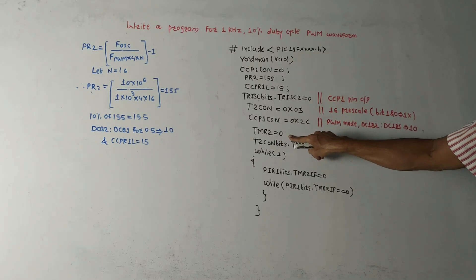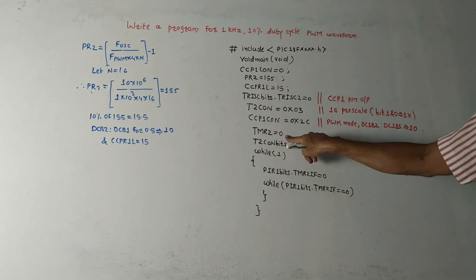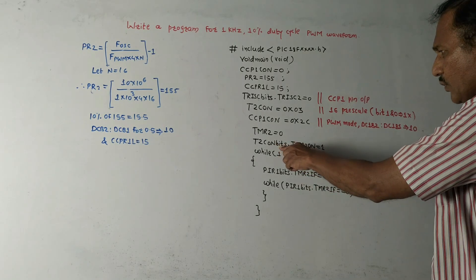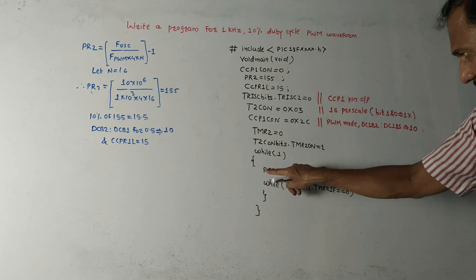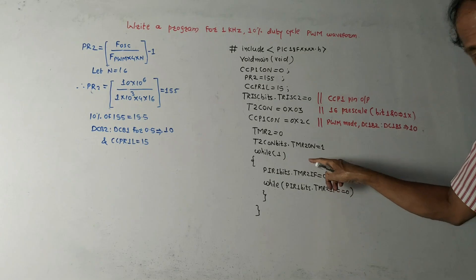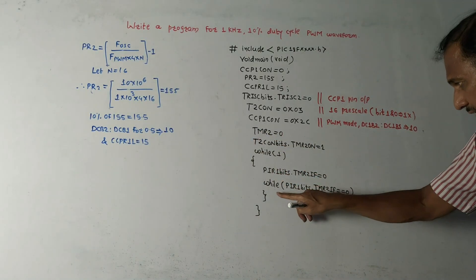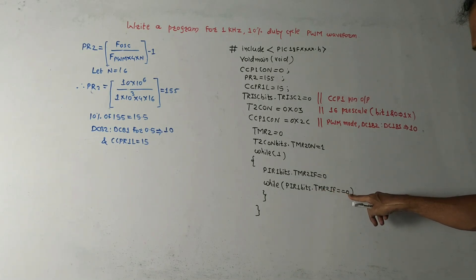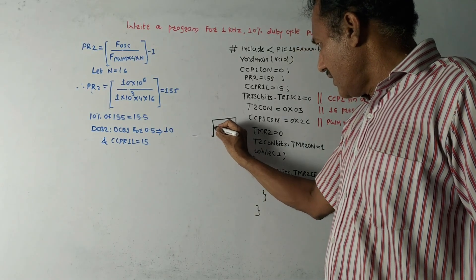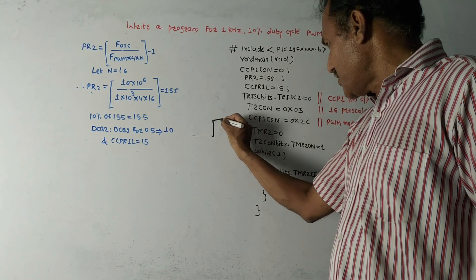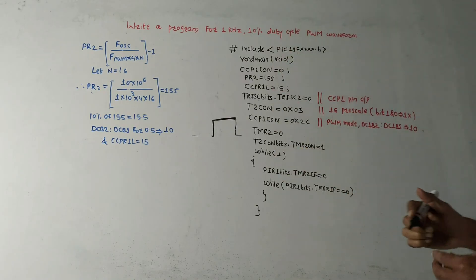Set Timer2 = 0 to reset it initially. Then set T2CON.TMR2ON = 1 to start the timer. In the while(1) loop: set the PIR1 flag to 0 initially. Once the count is reached, the flag is automatically generated. The condition is: while the flag equals 0, continue the loop — meaning we wait for the duration of the on-pulse period. This is how the PWM waveform is generated.